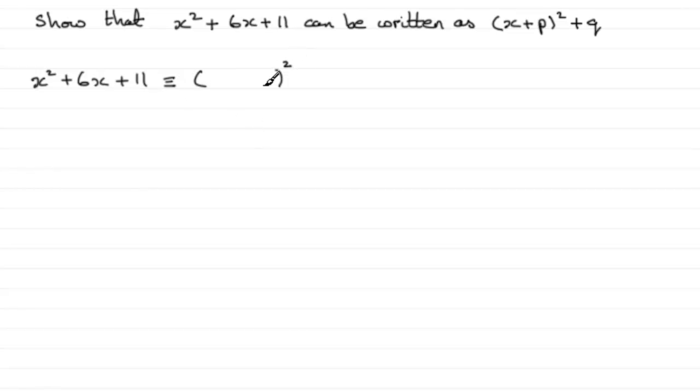And then in this bracket just put x, and then you halve this number, the coefficient of x, the number in front of the x term. And it's plus 6 at the moment, so if you halve that, you get plus 3.